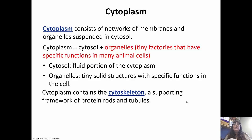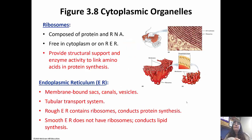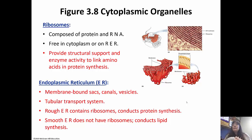The cytoplasm also contains the cytoskeleton, which is a framework of protein rods and tubules that perform various functions. Ribosomes are composed of ribosomal RNA. They can either be free-floating in the cytoplasm or attached to the rough endoplasmic reticulum. They provide structural support and enzyme activity in order to build proteins, linking amino acids together to form proteins.